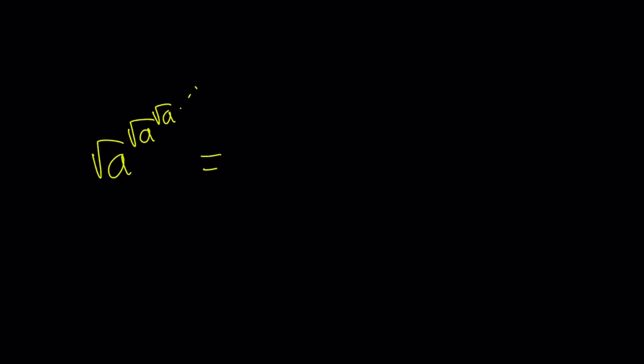So I'm going to write it again as square root of a to the power of square root of a to the power of square root of a, dot dot dot, going on forever, equals square root of 2. And we're going to try to find the a value or values.